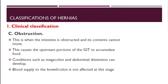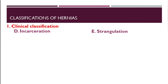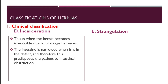Obstruction occurs when the intestine is obstructed and its contents cannot move; this causes upstream portions of the GIT to accumulate, and conditions such as megacolon and abdominal distension can develop. At this stage, blood supply to the bowel is not affected. Incarceration is when the herniation becomes irreducible due to blockage by feces, and the intestine is narrowed in the defect, predisposing the patient to intestinal obstruction.